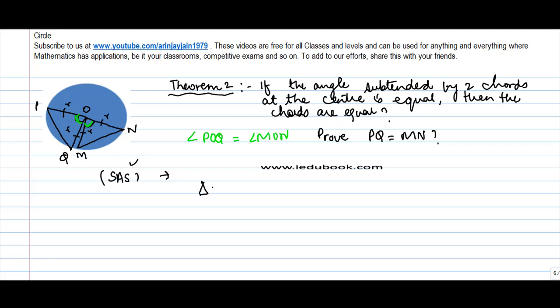Now, let's take triangle POQ and triangle MON. In this triangle, we notice that OP is equal to ON, these being equal to the radius. So we've got a side. Then we know that angle POQ is equal to angle MON.